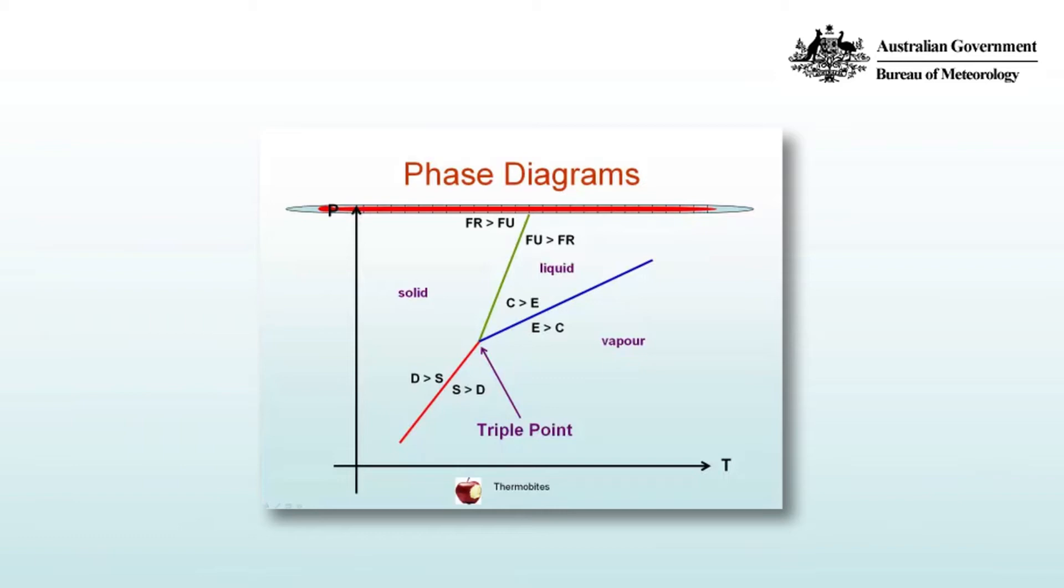Let's take the left hand side of the figure, that's the solid phase. On the solid side, the rate of deposition is greater than the rate of sublimation. And on the right hand side of that red line, the rate of sublimation is greater than the rate of deposition. So you're in the vapor phase of the diagram.